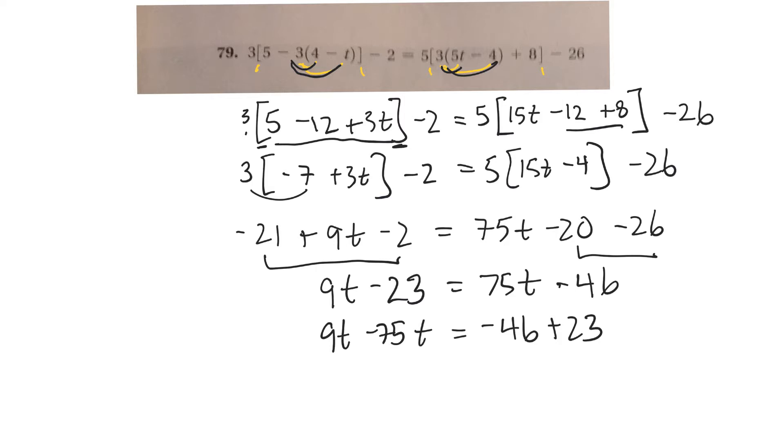And then I'm going to move the 23 to the right side. So minus 46 plus 23. Now I sort of did that step in my head where I added 23 and added 23. And I also went minus 75t and minus 75t. I sort of did that in my head. But hopefully you're following that. So 9t minus 75 is going to be negative 66t is equal to, and on this side, I'm thinking that comes out to minus 23.